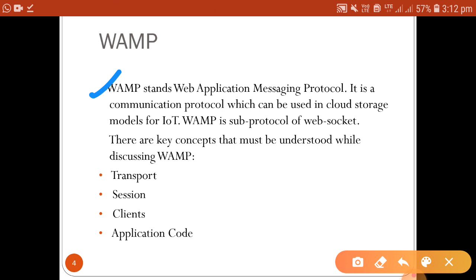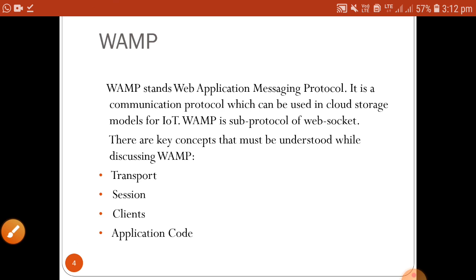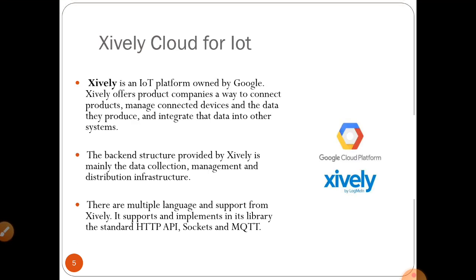When using WAMP for cloud-based IoT system implementation, you need to understand its four major components: transport, session, client, and application code. Transport specifies how data is sent and received; session defines how connections are established between devices; client defines how clients connect with databases and retrieve data; and application code provides the business logic to drive the entire communication.